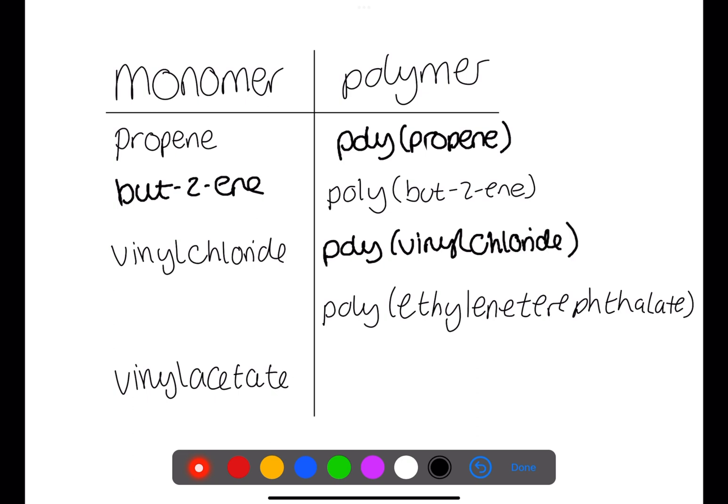The third polymer is polyethylene terephthalate. This means that the monomer is ethylene terephthalate. The last monomer is vinyl acetate. This means the polymer is polyvinyl acetate.